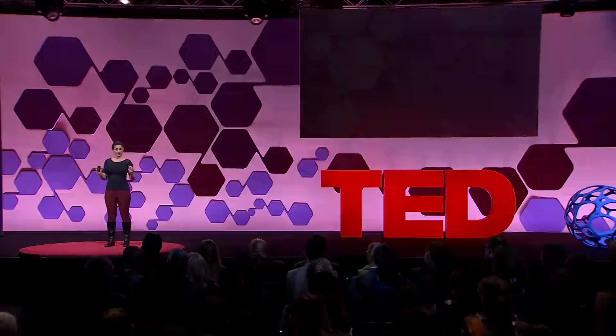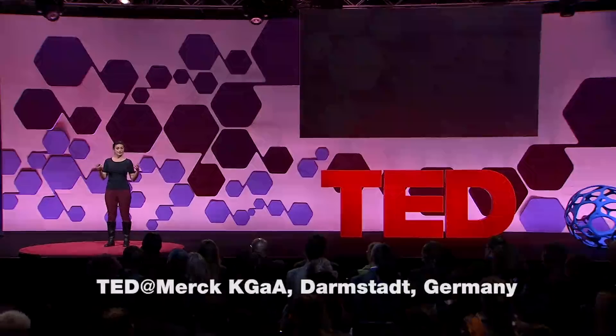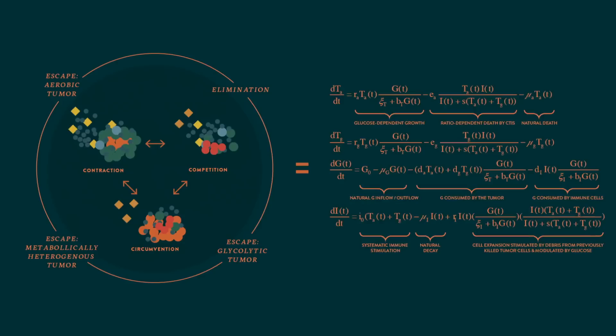Essentially, it works like this. First, I identify the key elements that I believe may be driving behavior over time of a particular mechanism. Then I formulate assumptions about how these elements interact with each other and with their environment. It may look something like this. Then I translate these assumptions into equations, which may look something like this. Finally, I analyze my equations and translate the results back into the language of biology.